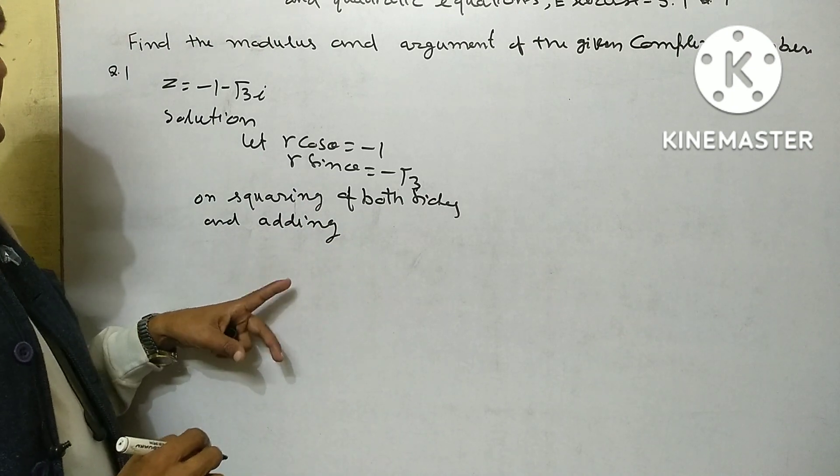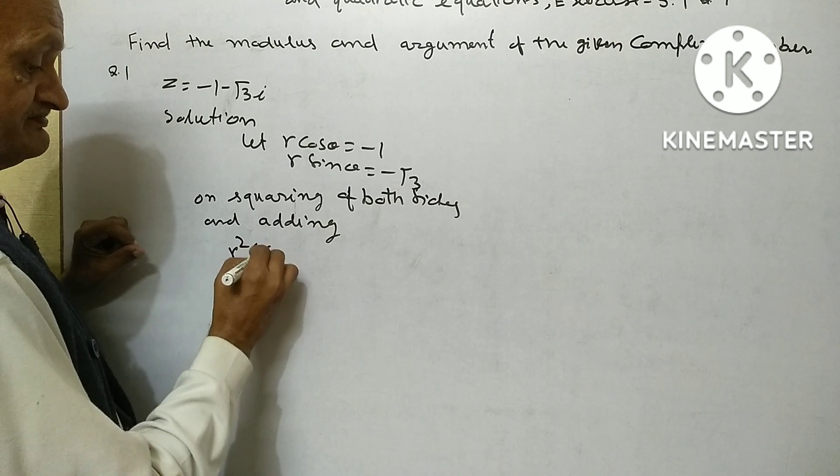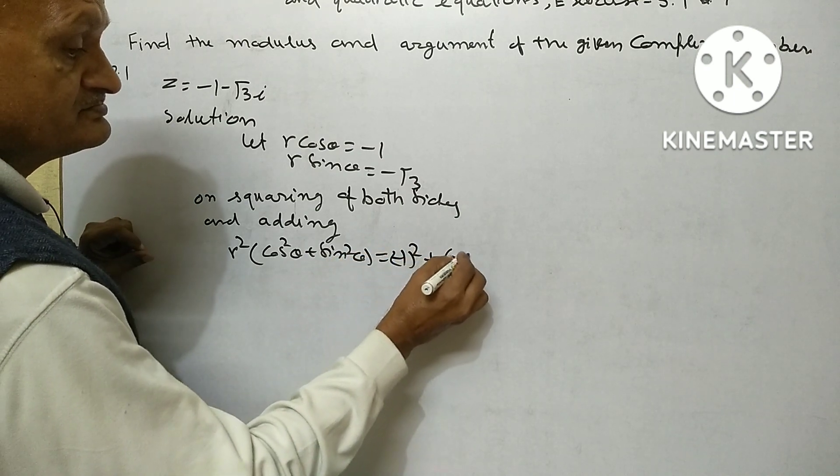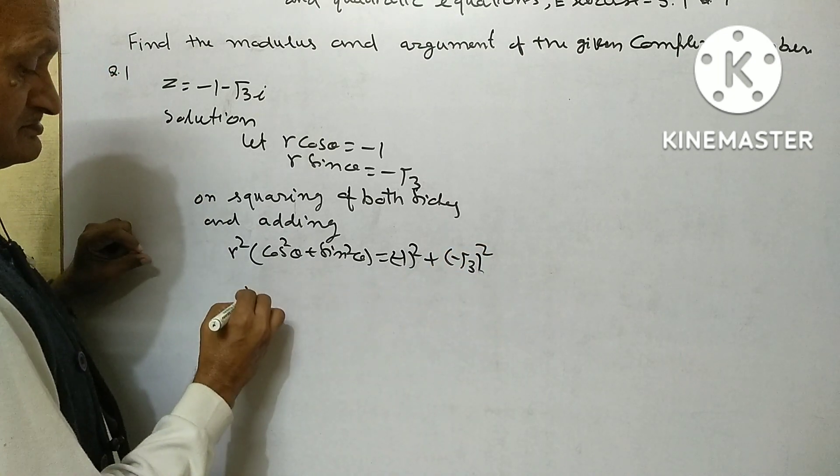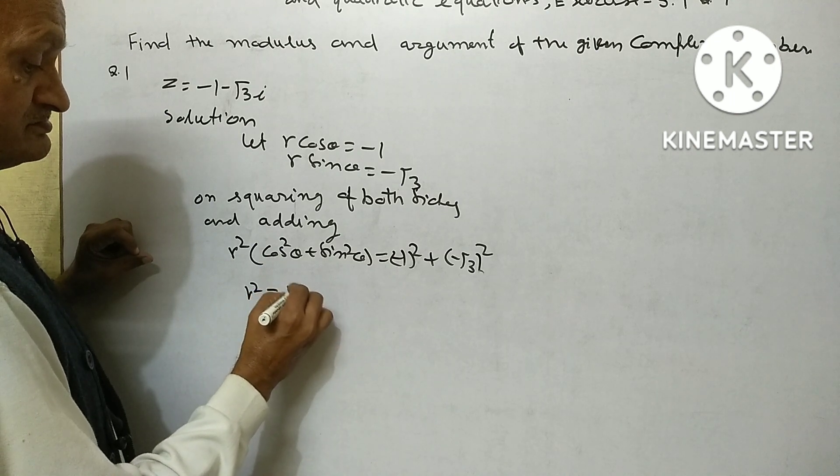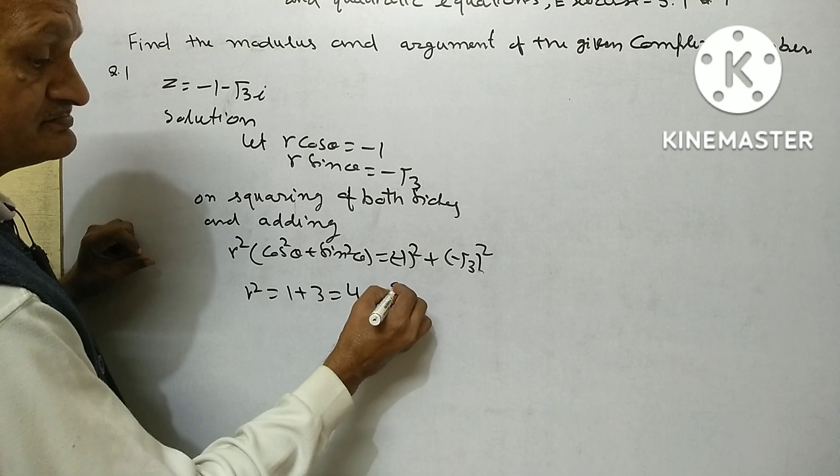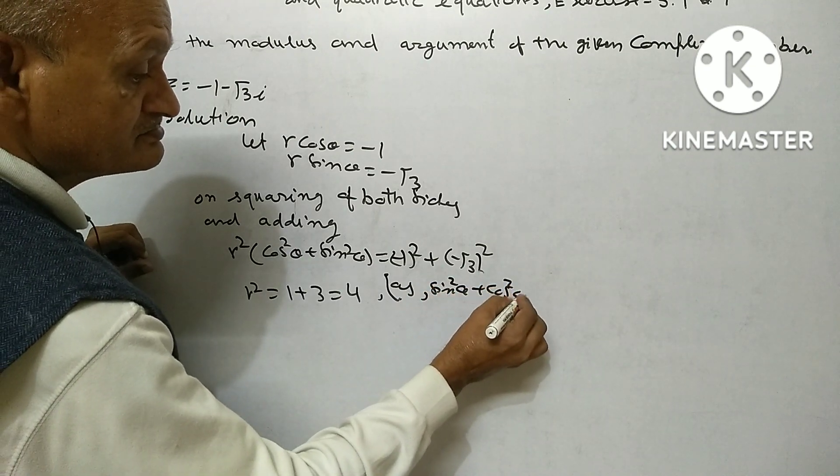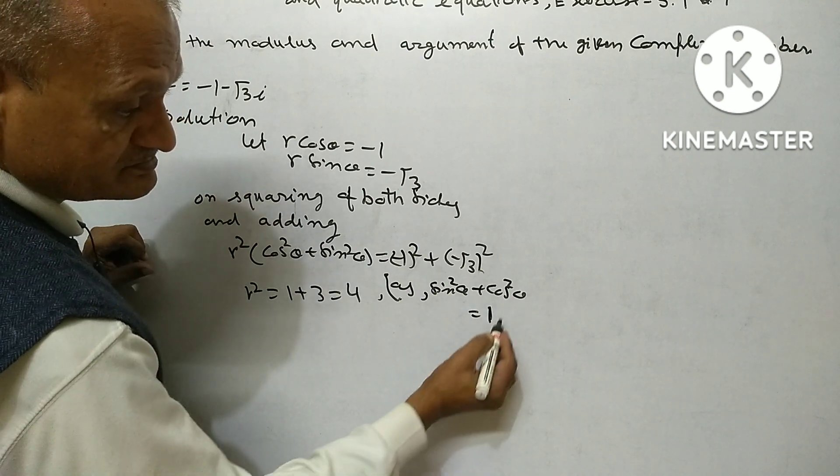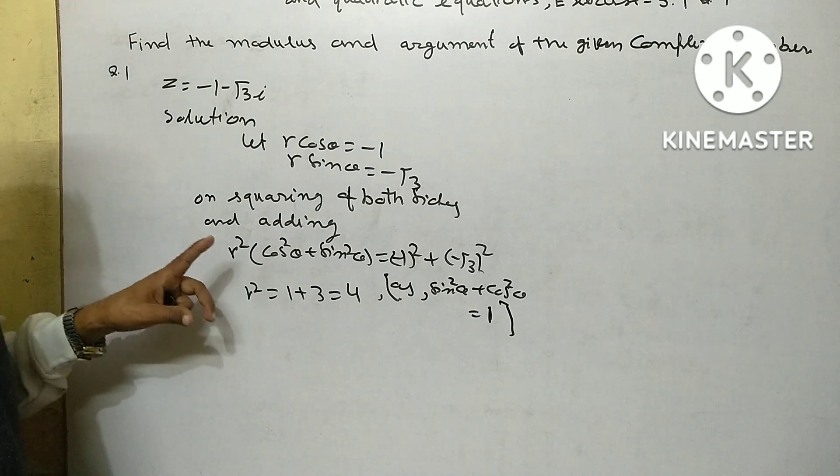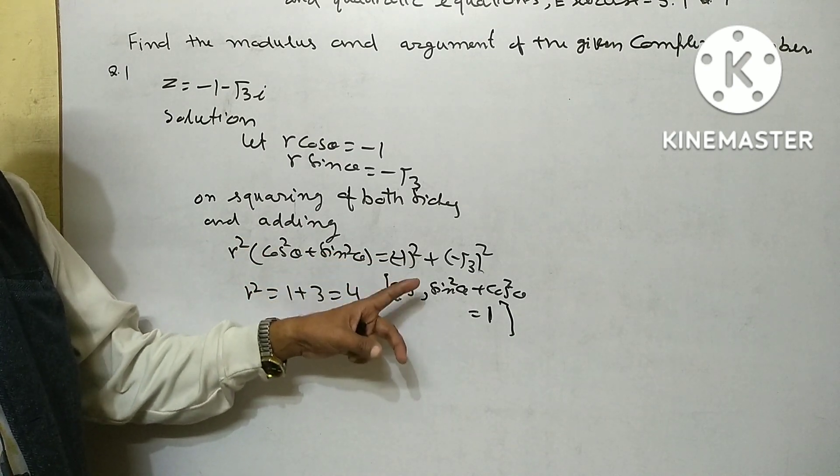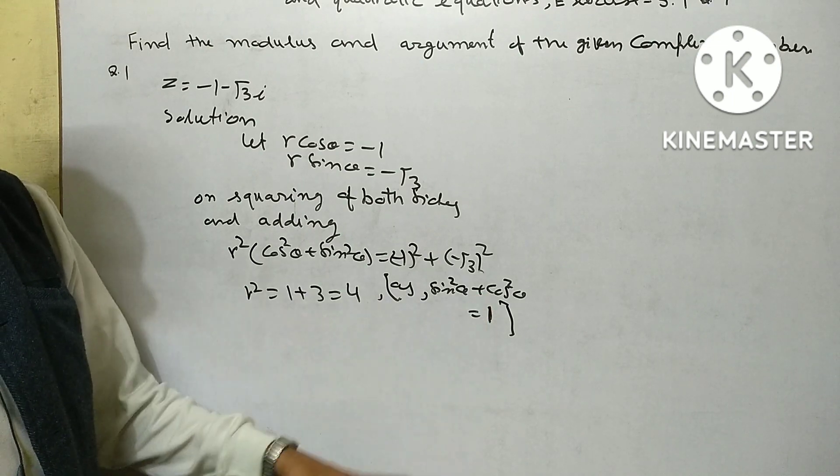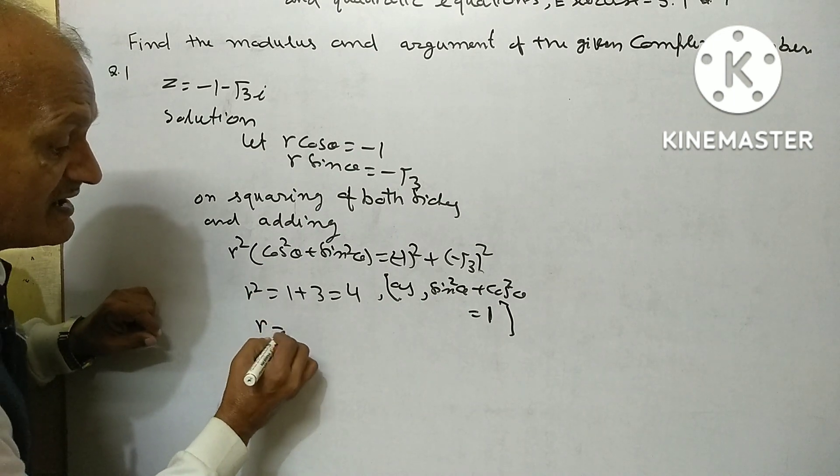On squaring both sides and adding, r square cos square theta plus sin square theta equal 1 squared plus minus root 3 squared. R square equal 1 plus 3 means 4. As sin square theta plus cos square theta equal 1, r equal 2.